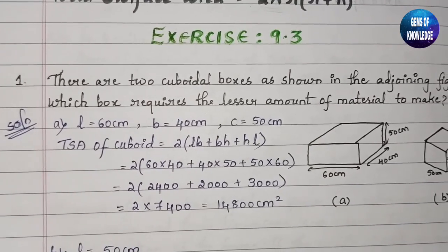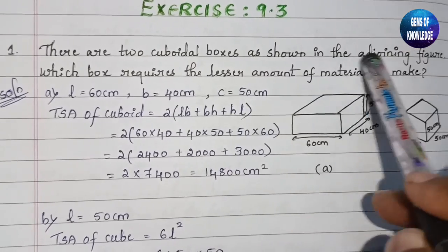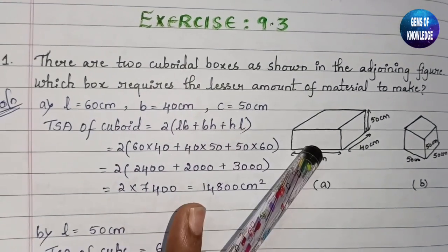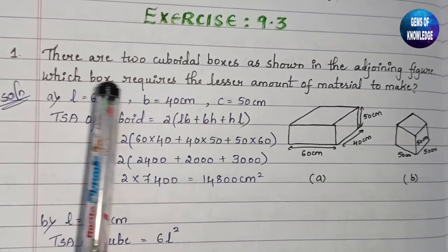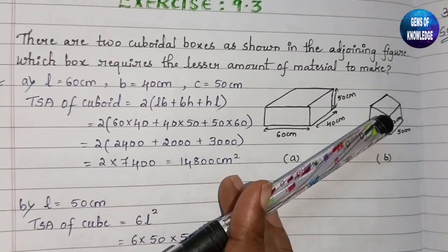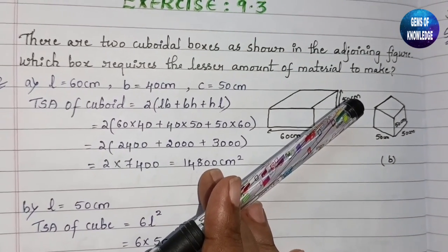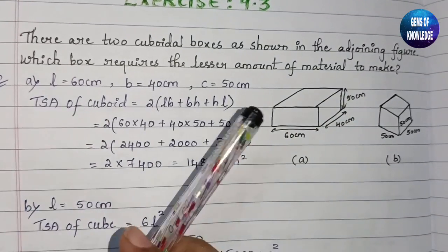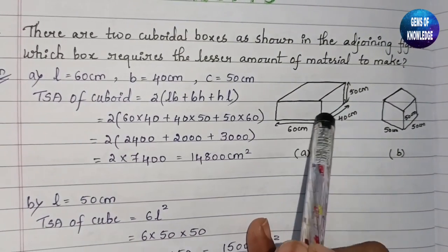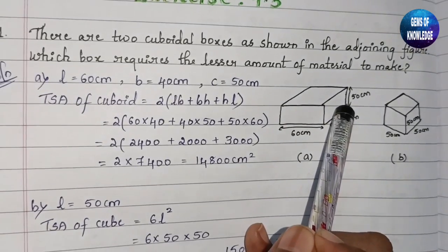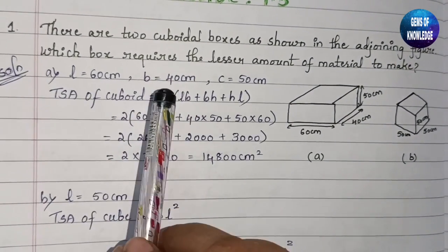Now let us start with Exercise 9.3. The first question: there are two cuboidal boxes as shown in the adjoining figure. Which box requires the lesser amount of material to make? For the first box, l = 60 cm, breadth = 40 cm, and height = 50 cm. We need to find the total surface area of the cuboid.